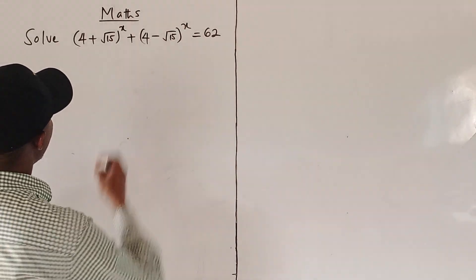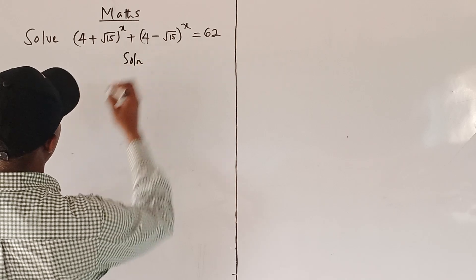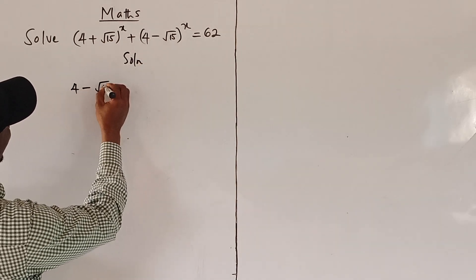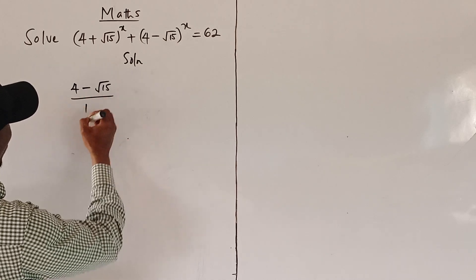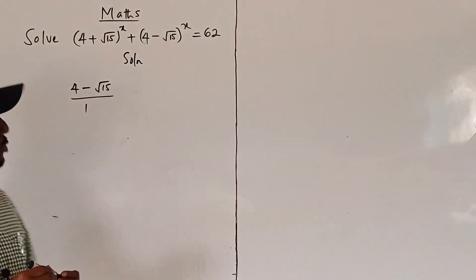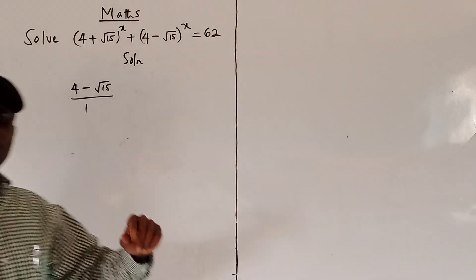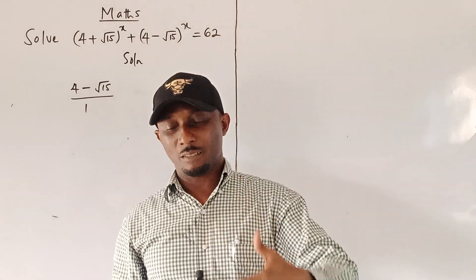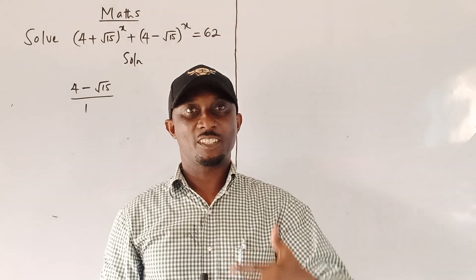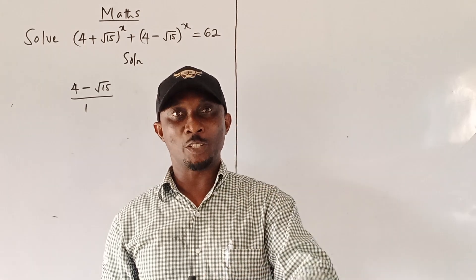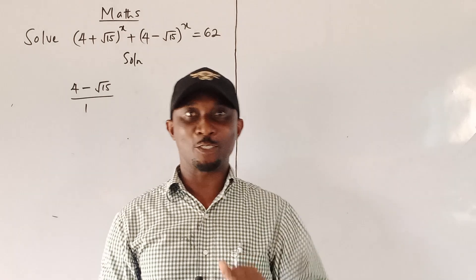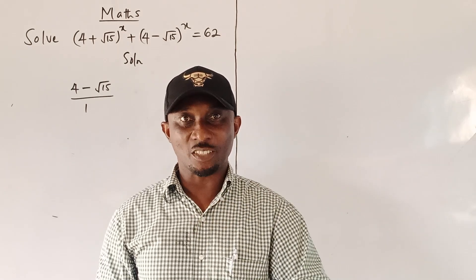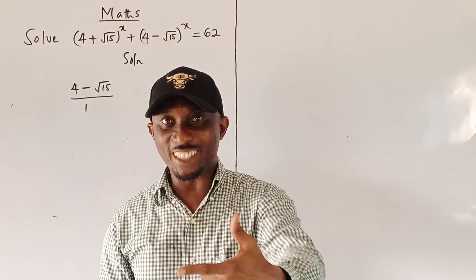I'll take (4 − √15) divided by 1 as a fraction, and we are going to rationalize this. Contrary to what many believe, it's not only when a surd is at the denominator of a fraction that you rationalize — that's not true. You rationalize surds to get rational expressions tailored to your mathematical need.